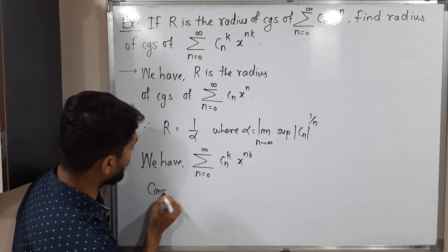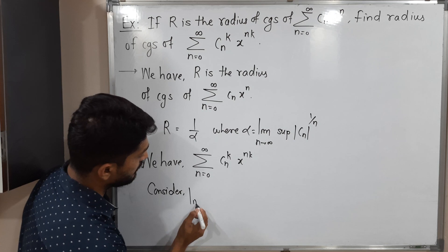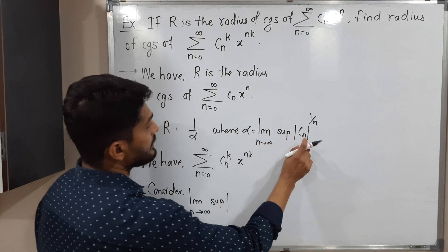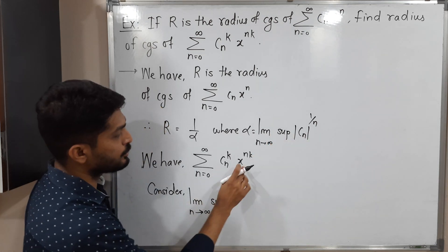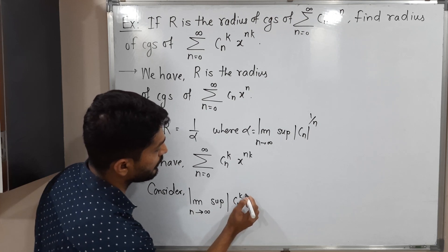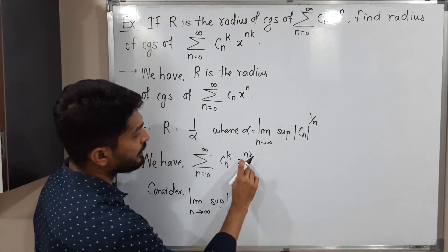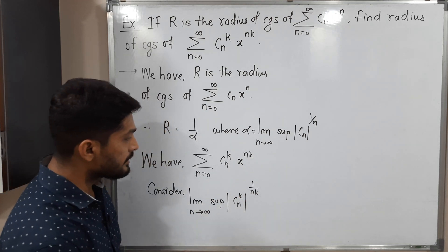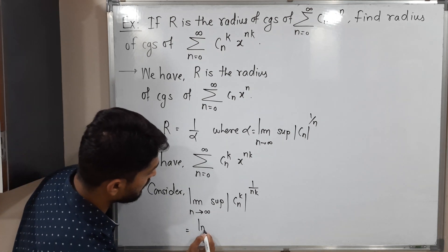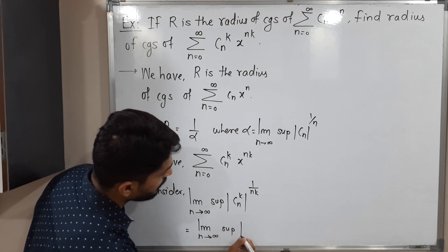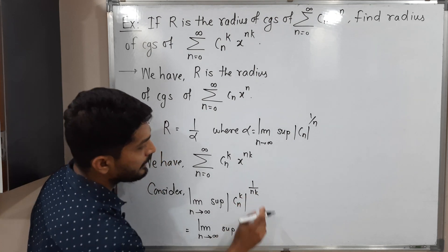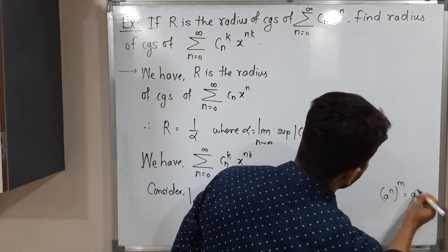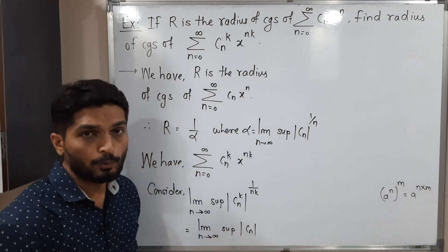Consider the limit: limit n tends to infinity, supremum of mod cₙ raised to k, raised to 1 by nk. Here cₙ raised to k is the coefficient of x raised to nk, so we raise it to 1 by nk. Using rules of indices — a raised to n, raised to m equals a raised to n times m — we simply take the product of the powers.